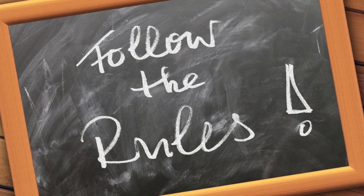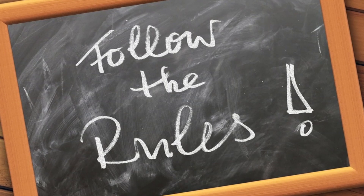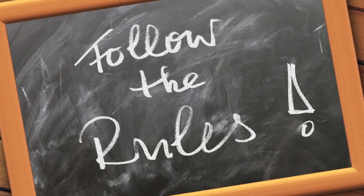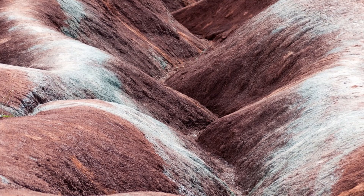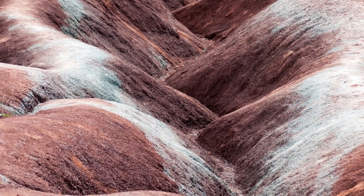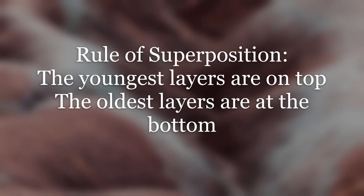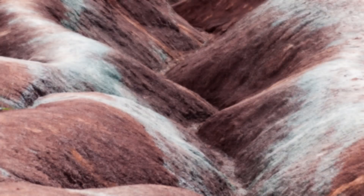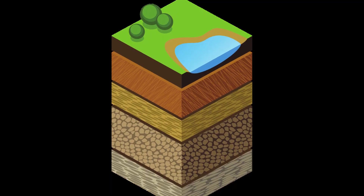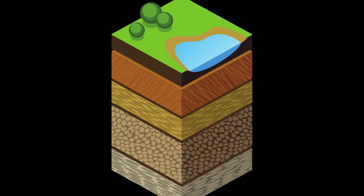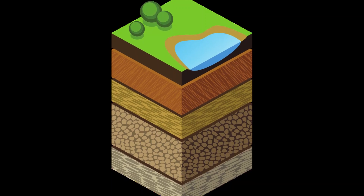This technique works because of a rule called the rule of superposition. The rule of superposition states that the soil layer closest to the top of the ground is the youngest and most recent, and as the layers get deeper, the older they are. Therefore, artefacts that are found below other artefacts are considered to be older.